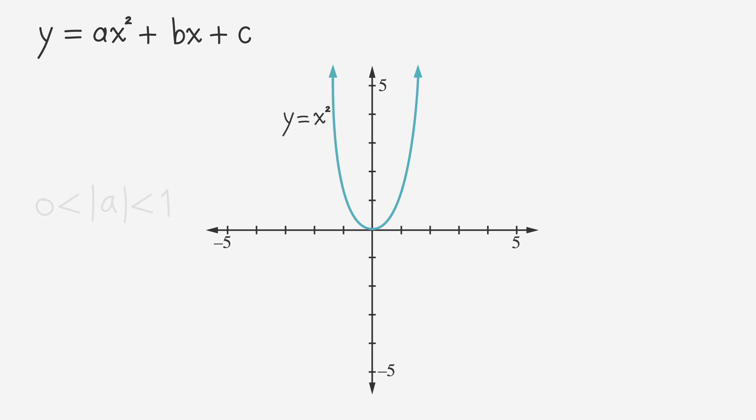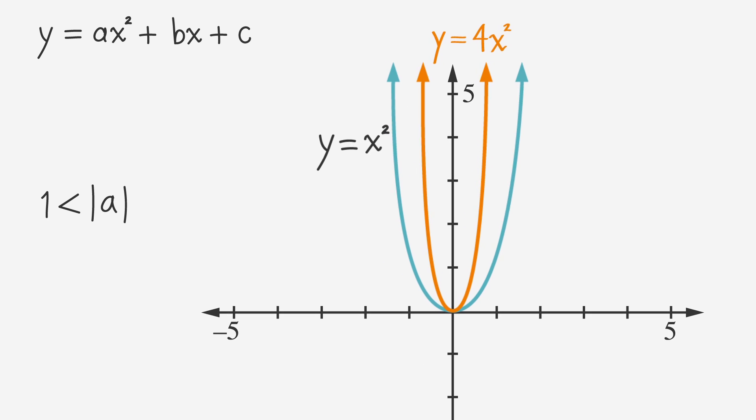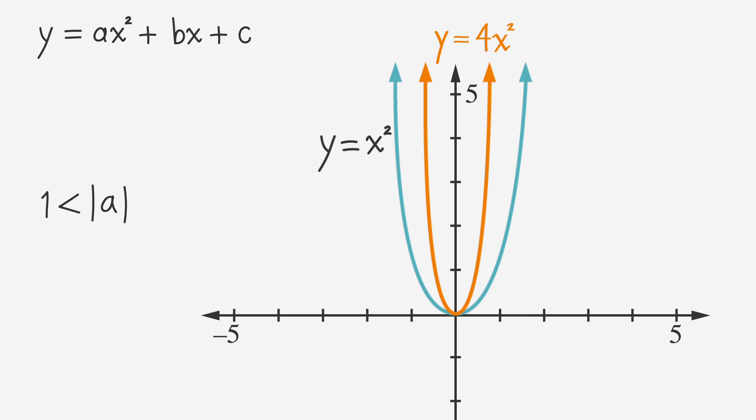When the absolute value of a is greater than 1, the parabola will be narrower than y equals x squared. For example, the graph of y equals 4x squared is narrower than the graph of y equals x squared.